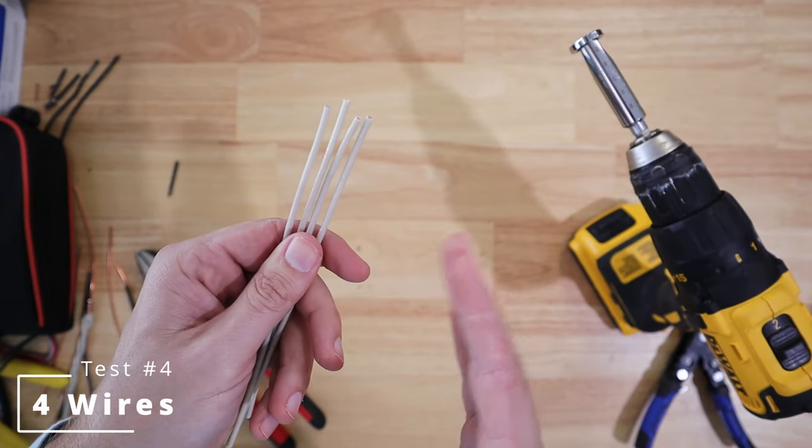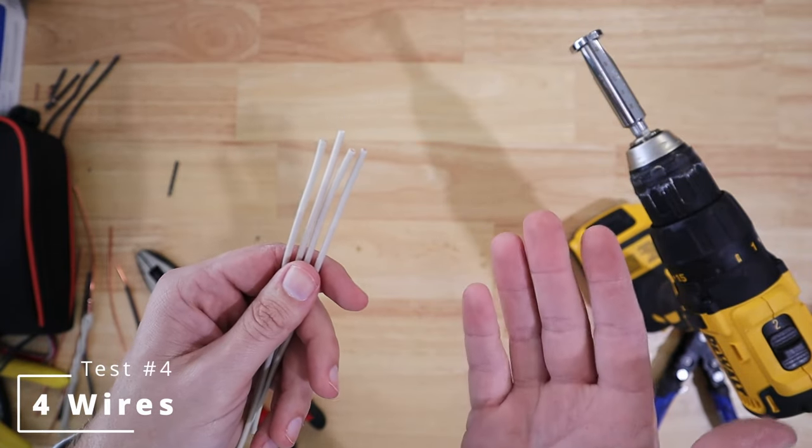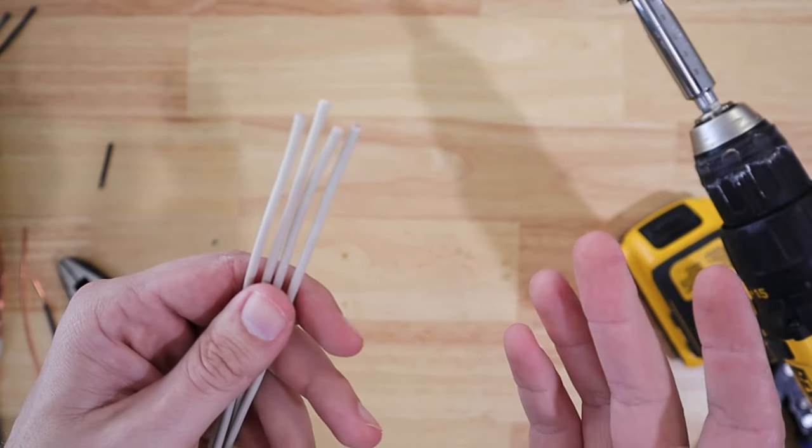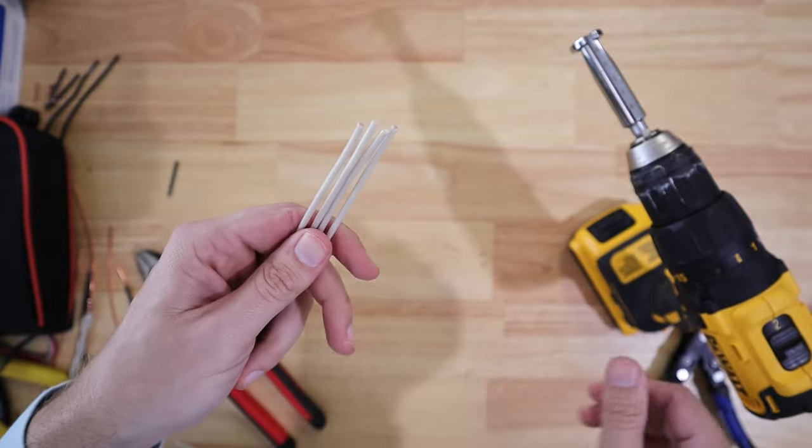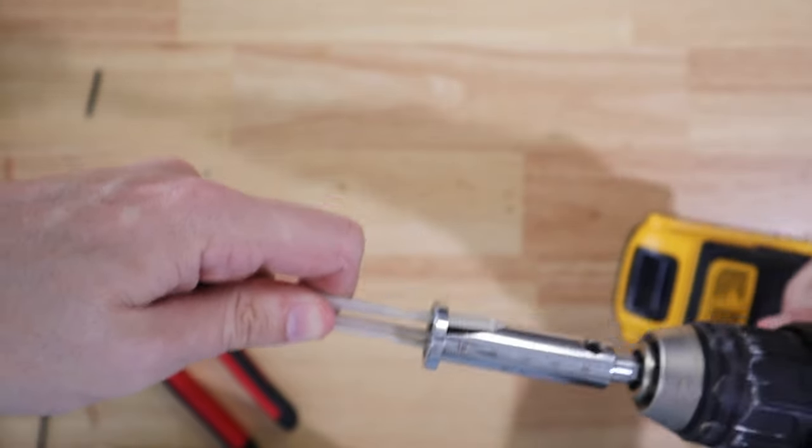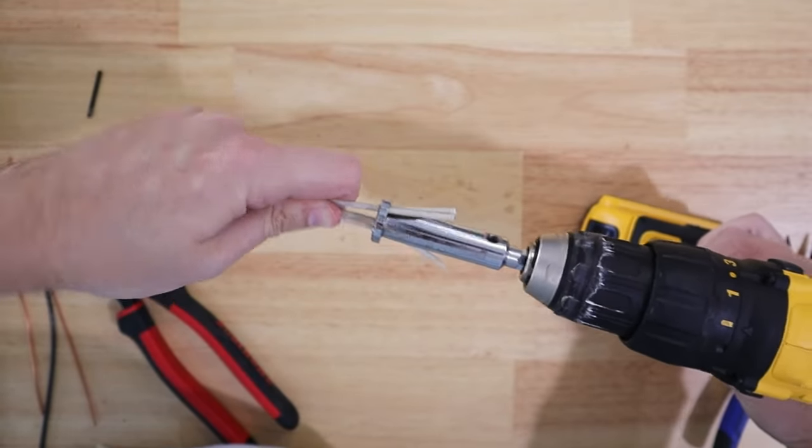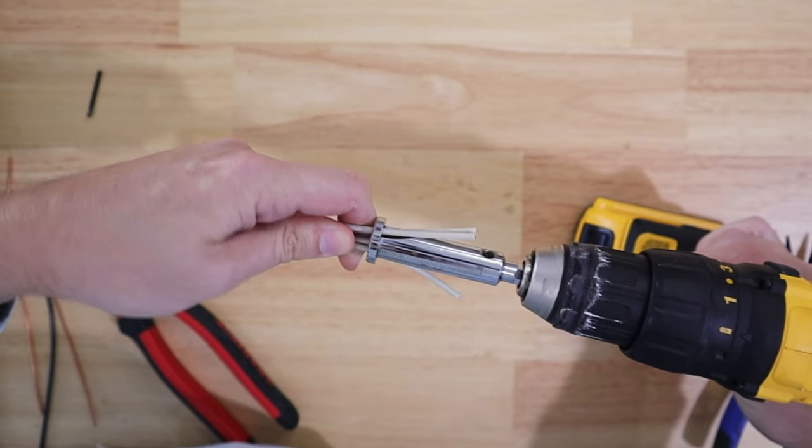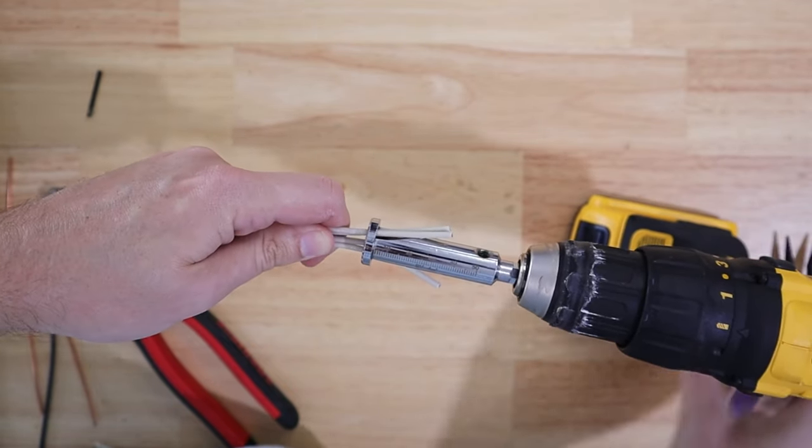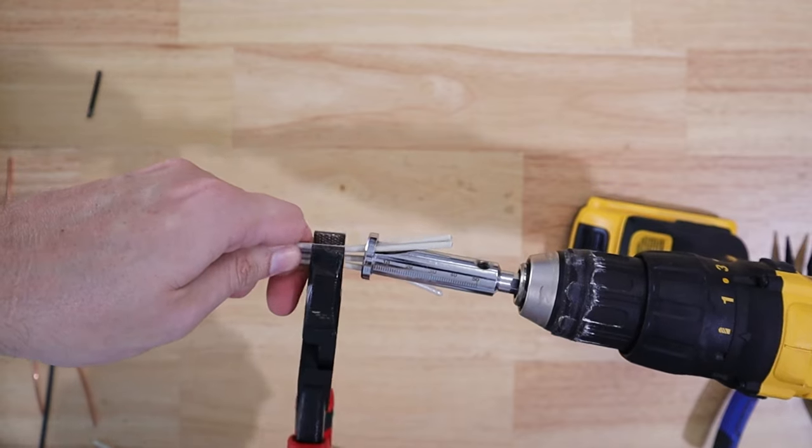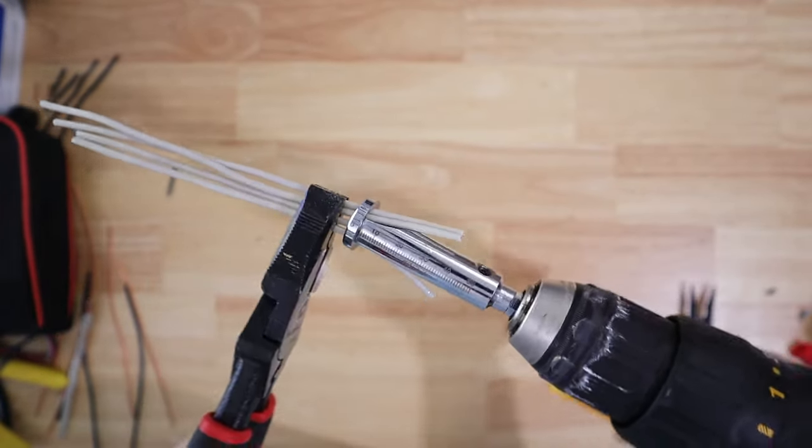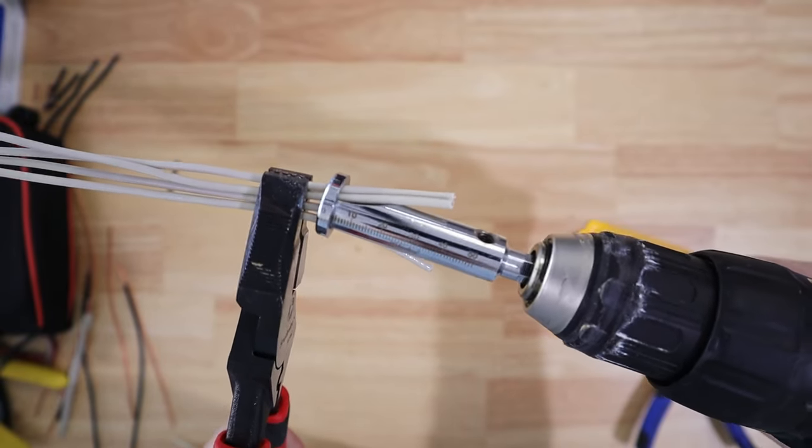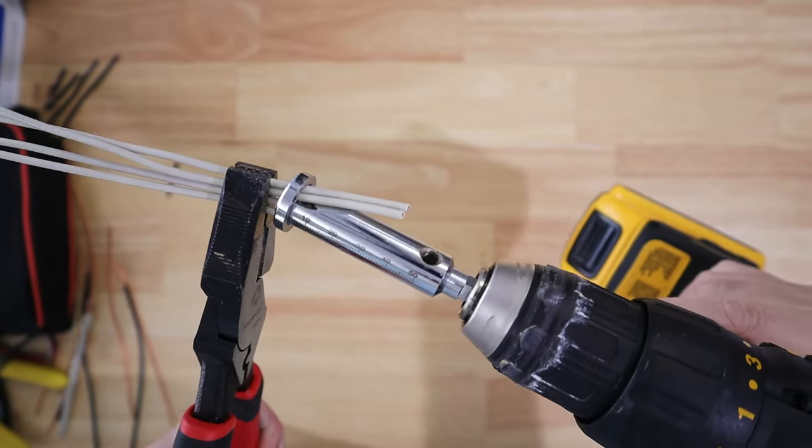The three wires together seem to work alright. The two wires I don't think worked very well at all. So let's try four and see how it does with four. In this case, one wire will go up in the middle of the tool. One of the sides will have one wire coming out of it, and the other side will have two wires coming out of it. There's two on this side, one on this side, and one going up the center. Let's see how it does with four wires.